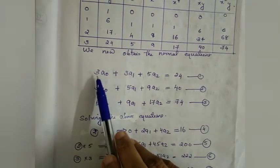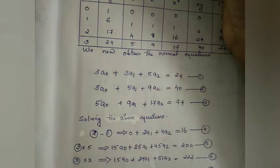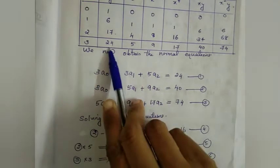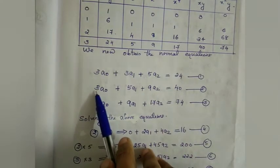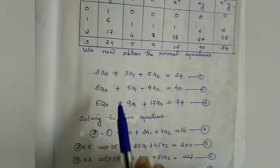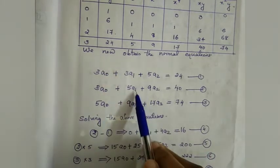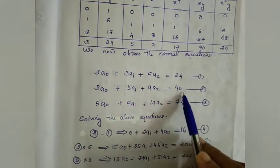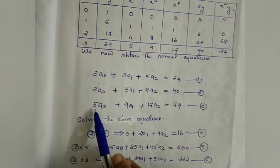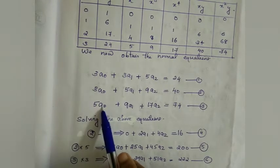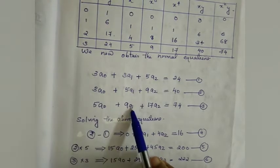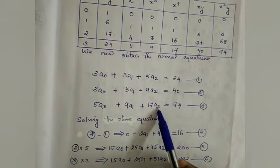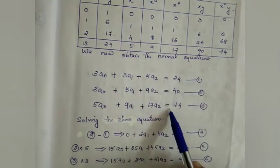Substituting into the normal equations with m = 3: Equation 1: 3a0 + 3a1 + 5a2 = 24. Equation 2: 3a0 + 5a1 + 9a2 = 40. Equation 3: 5a0 + 9a1 + 17a2 = 74.